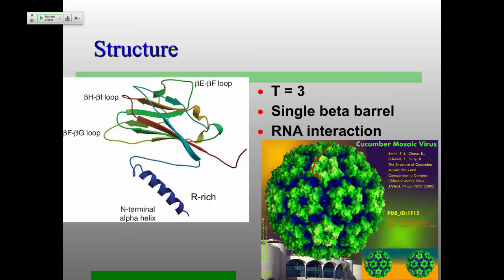These particles are purely quasi-equivalent — there's only one capsid protein, which can form either pentamers or hexamers. That's the quasi-equivalence principle exactly. The capsid protein has a beta-barrel at the top. The N-terminal region is on the inside of the virus particle, incredibly rich in arginine residues, while the beta-barrel is on the outside.